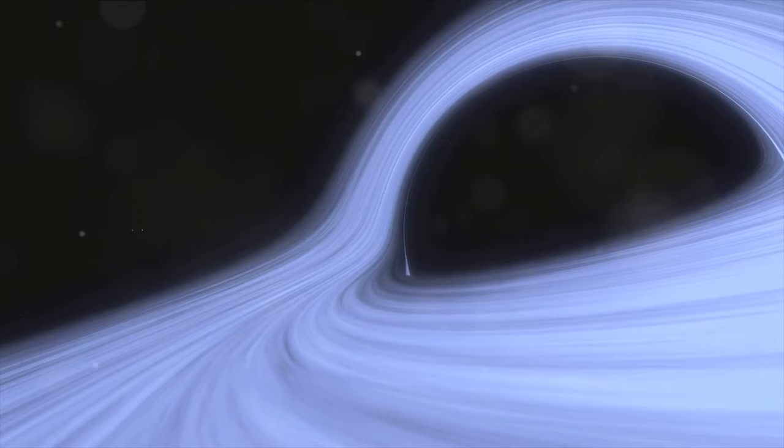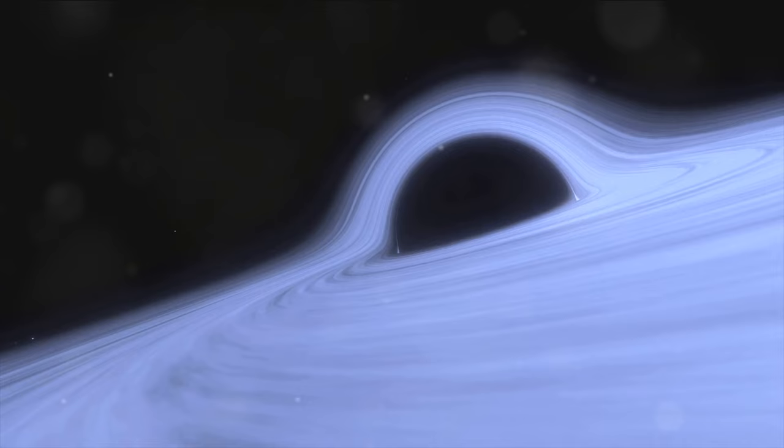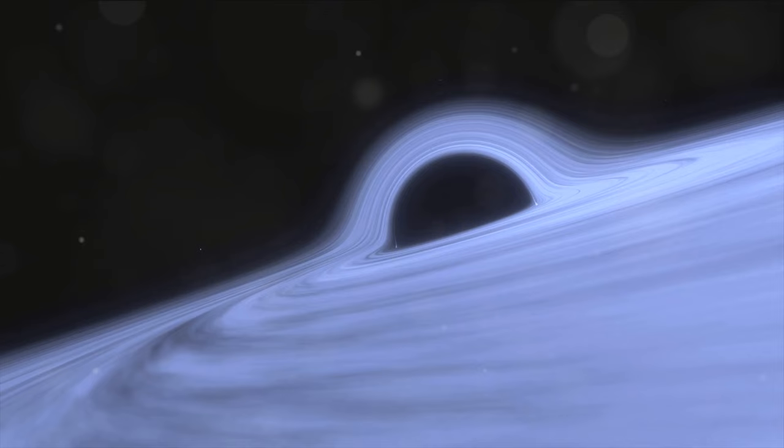The singularity is the engine that powers the black hole, the epicenter of its gravitational might. Onto the third and final component, the accretion disk. Picture a cosmic whirlpool, a glowing disk of material swirling into the black hole. As matter spirals in towards the event horizon, it heats up, emitting copious amounts of radiation.